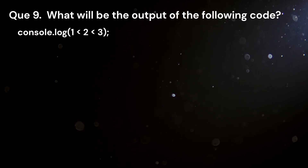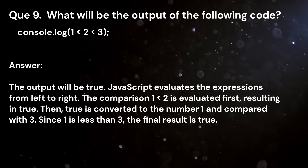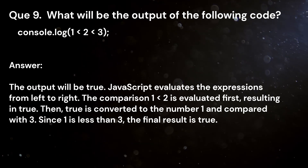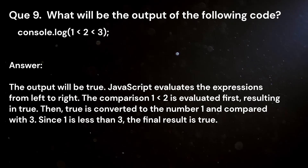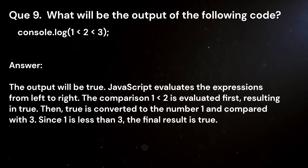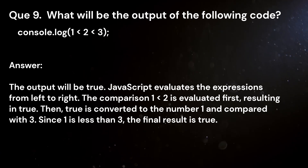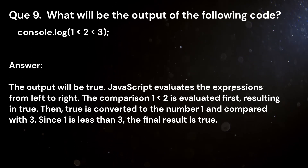Question 9. What will be the output of the following code? console.log(1 < 2 < 3). Answer. The output will be true. JavaScript evaluates the expressions from left to right. The comparison 1 < 2 is evaluated first, resulting in true. Then, true is converted to the number 1 and compared with 3. Since 1 is less than 3, the final result is true.